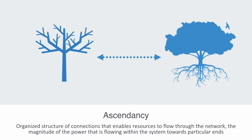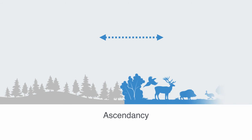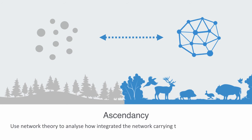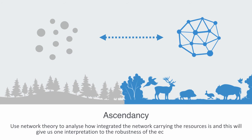Ascendancy is a key index in determining the ability of an ecosystem to prevail against disturbance by virtue of its combined organization, connectivity, and size. This can be illustrated by analogy to the difference between a living and dead organism — interpreted as the volume of resources flowing through the system. The greater the flow, the greater the vitality and thus more ascendancy. Network theory can therefore be used to analyze how integrated a network is, giving us interpretation of the robustness of the ecosystem.